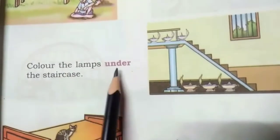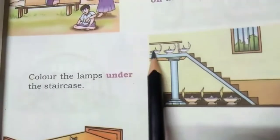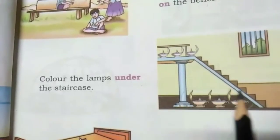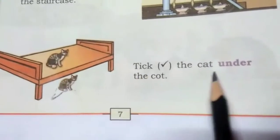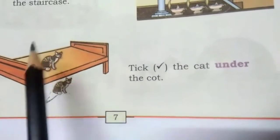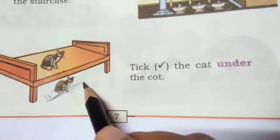Color the lamp under the staircase. Where is the lamp? Under the staircase — this is on and this is below/under, so color this. Tick the cat under the cot. Where is the cat? Under — tick the cat under the cot. Thank you.